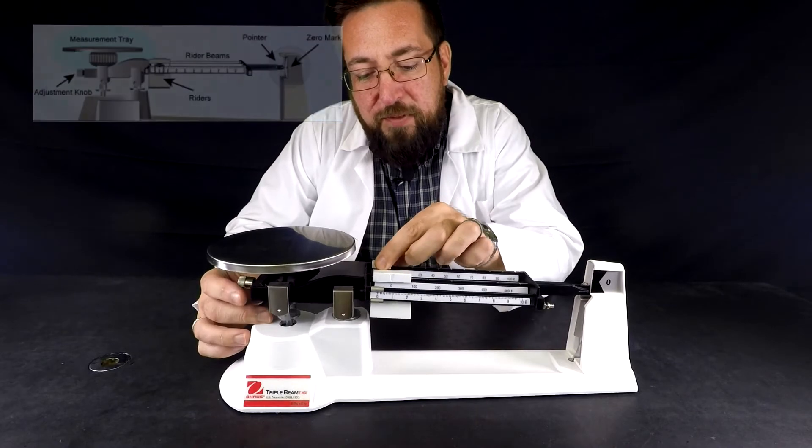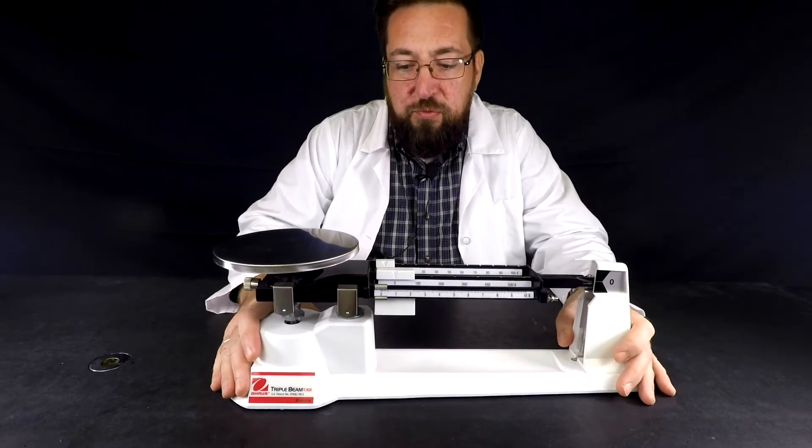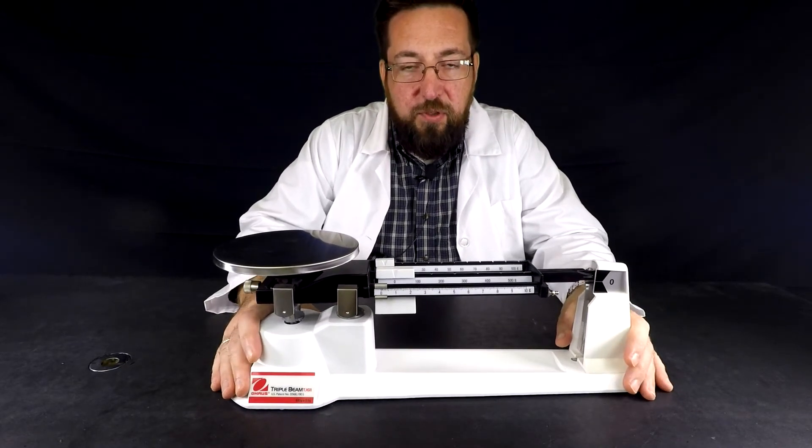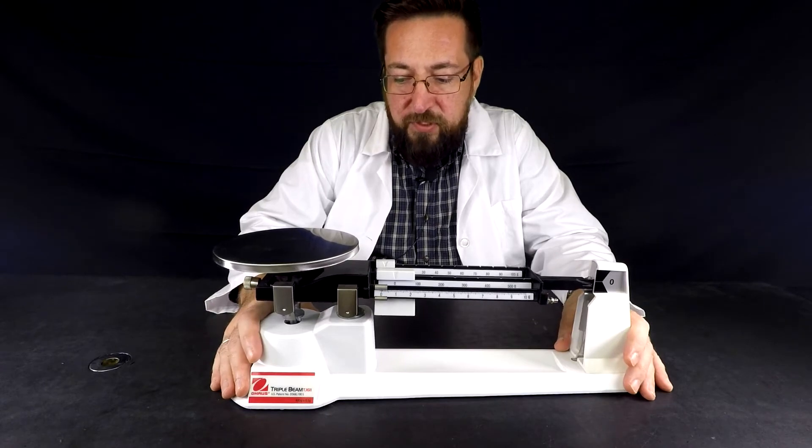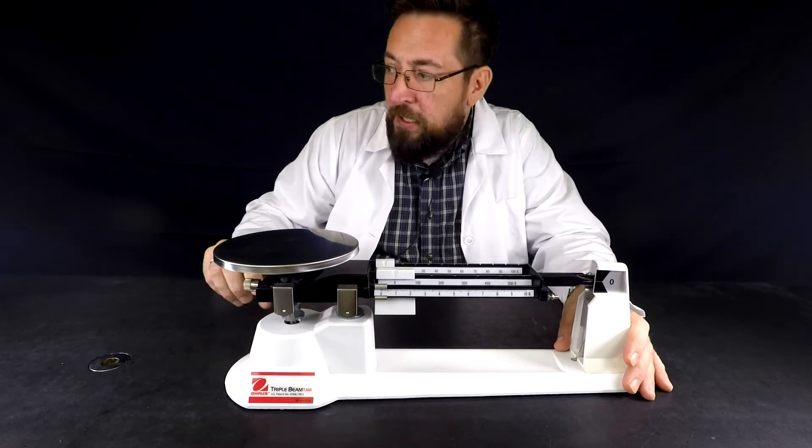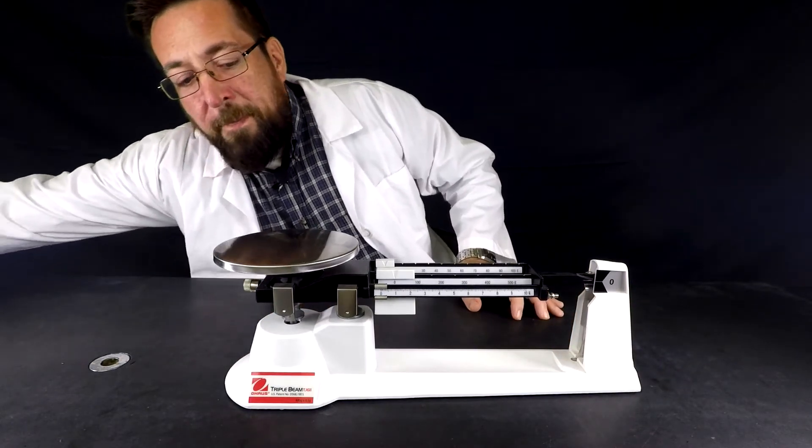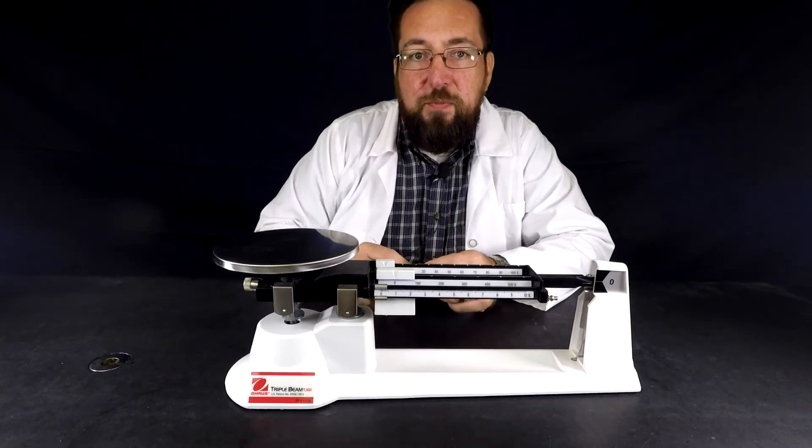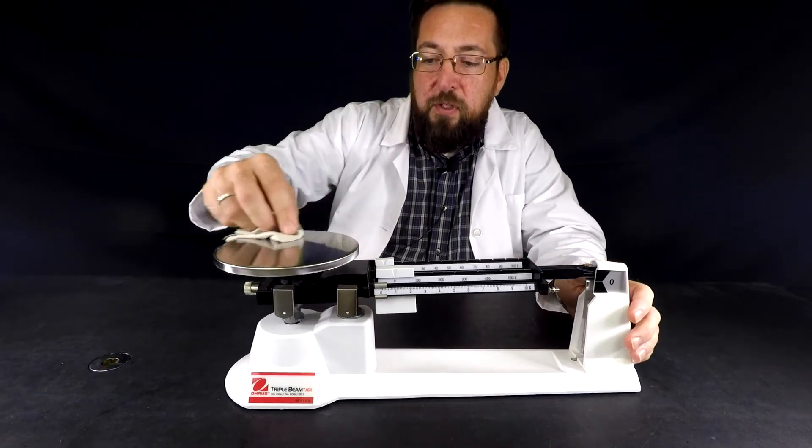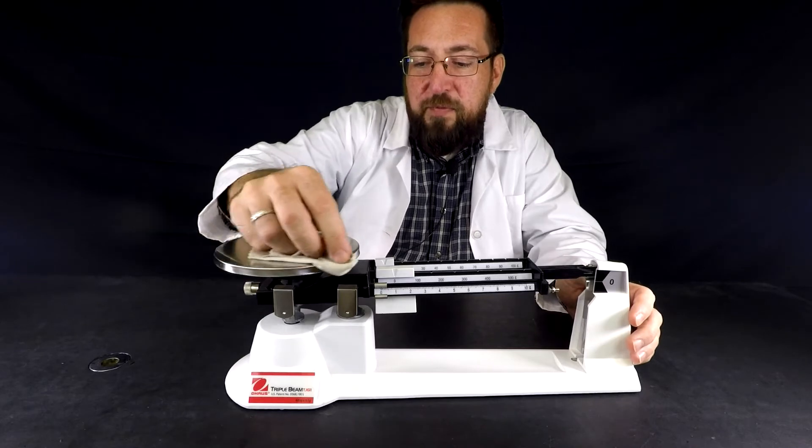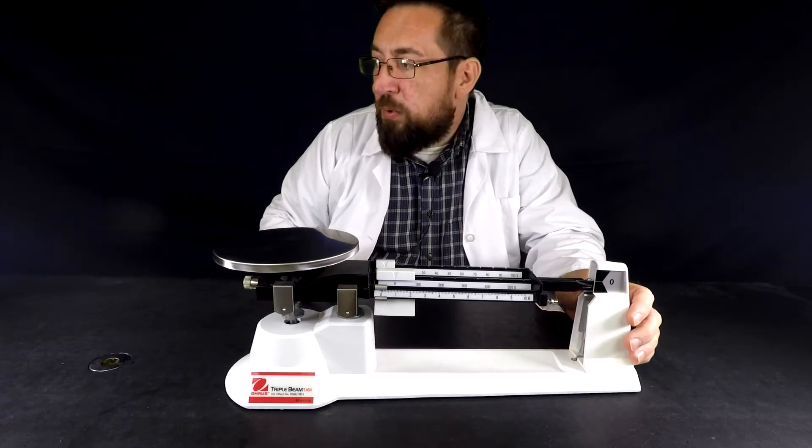So the first thing we have to do is make sure that your triple beam balance is set on a level surface. If you don't have a level surface you're not going to get a correct reading. Second, if this has been sitting in a classroom for a long time you want to dust it off because that tenth of a gram of dust may affect your reading and this is a very precise instrument.